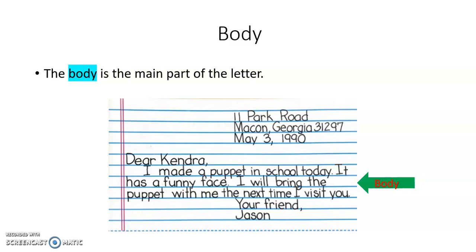The third part of a friendly letter is the body. The body is the main part of the letter — that's where all of the conversation takes place. This is where you write and ask questions or tell your friend things that are going on, things you want to do, how you feel. There is a green arrow drawn to the body of this letter, and it says: 'I made a puppet in school today. It has a funny face. I will bring the puppet with me the next time I visit you.' That's the body — it's telling you what's going on and what the person is writing about.